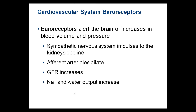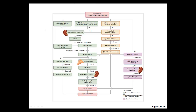Blood pressure is also regulated by baroreceptors, which we covered in the cardiovascular system. If blood pressure is too high, the reflex is to increase glomerular filtration rate, allowing sodium and water to leave and correcting blood pressure. Glomerular filtration rate can also be regulated by sympathetic innervation. Here is a summary chart of sodium and water loss regulation.